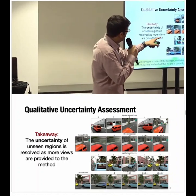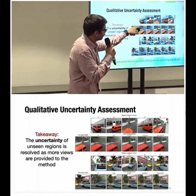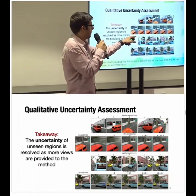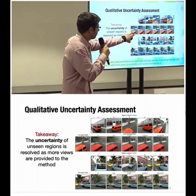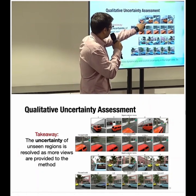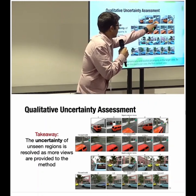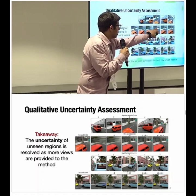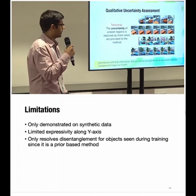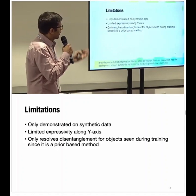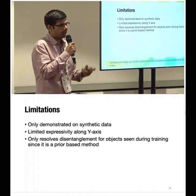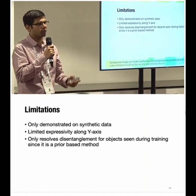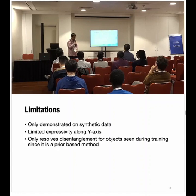We can also add more views dynamically to resolve uncertainty. For example, a first context view may not provide enough information, but a third view containing the background allows our model to synthesize background views perfectly. Limitations include: results are demonstrated only on synthetic data, and with fleets of autonomous vehicles and geo-tagged data, we could potentially render ground plans for entire cities.